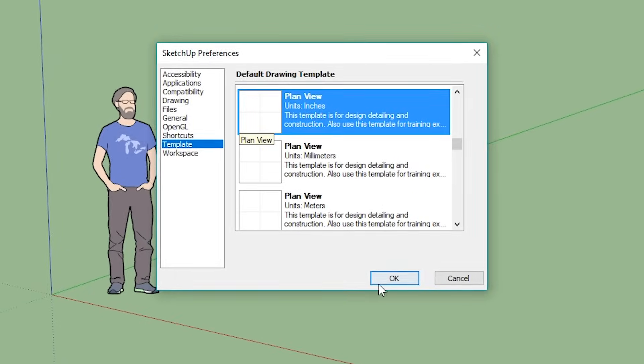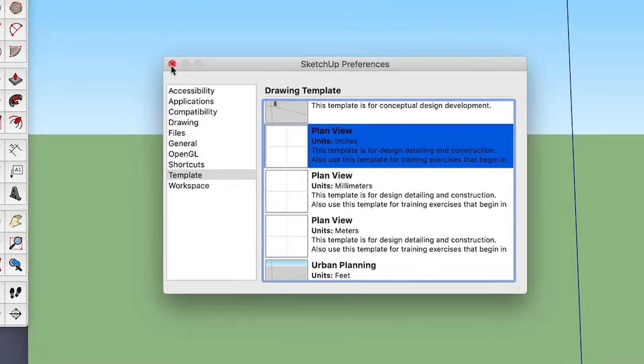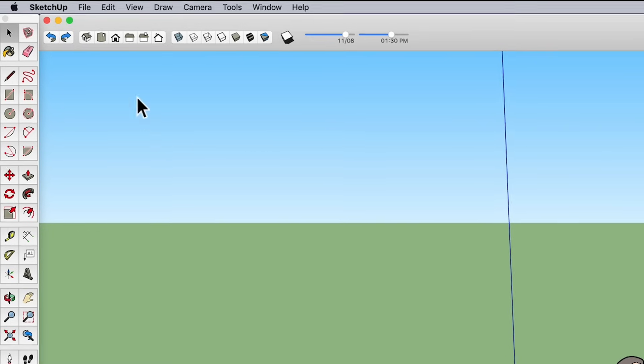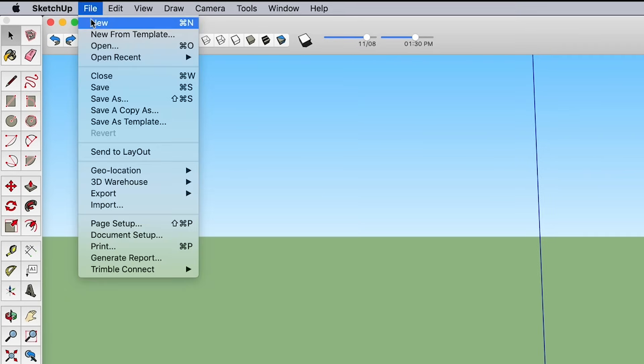If you're a Windows user, you'll click the button at the bottom right to finish. Mac users, you just close the window. Now, your current files template won't change, but when you start a new file, you'll start in the new template.